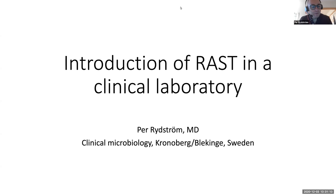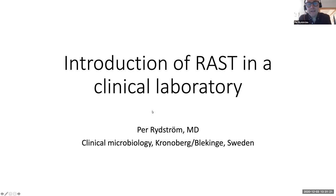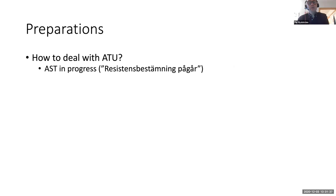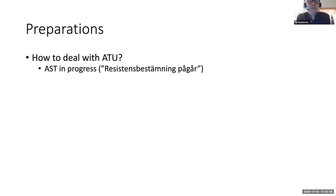Per Rydström, a clinical microbiologist at the laboratory in Kronoberg and Blekinge, Sweden, presents the experience of introducing Rapid AST in two clinical laboratories. Several preparations were needed before implementation. One key issue was how to handle the ATU — how to report it to clinicians without confusion while still conveying that an AST is being performed. The ATU result might change from four to six hours, or might need a regular AST the following day. They chose to report it as 'Resistensbestämning pågår' (AST still in progress), meaning more results will follow.